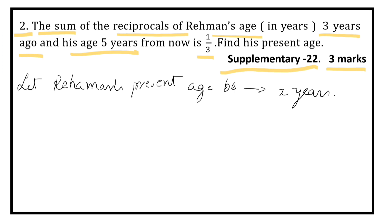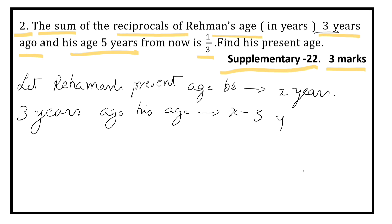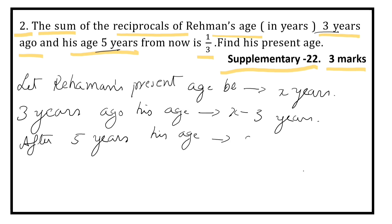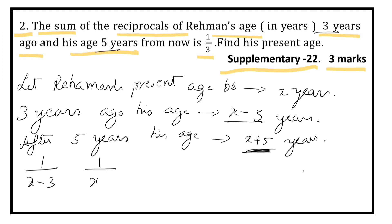3 years ago his age was X minus 3 years. After 5 years his age will be X plus 5 years. The reciprocal of X minus 3 is 1 by X minus 3. The reciprocal of X plus 5 is 1 by X plus 5. The sum of these two is equal to 1 by 3.